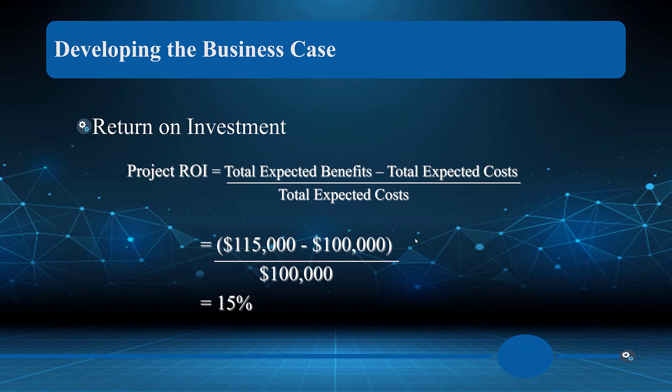When we talk about overtime, let's not forget burnout. Some employees need to work their 40 hours a week — they have family and other obligations. That brings us to return on investment. The standard ROI calculation is: total expected benefits minus total expected costs, divided by total expected costs, which gives us a percentage.